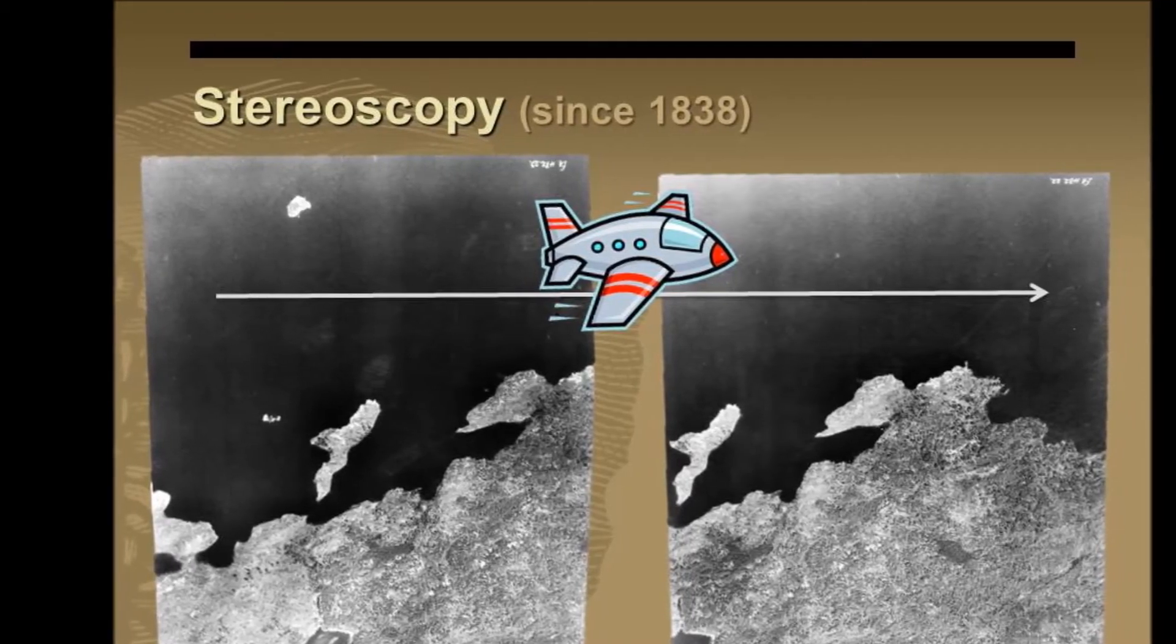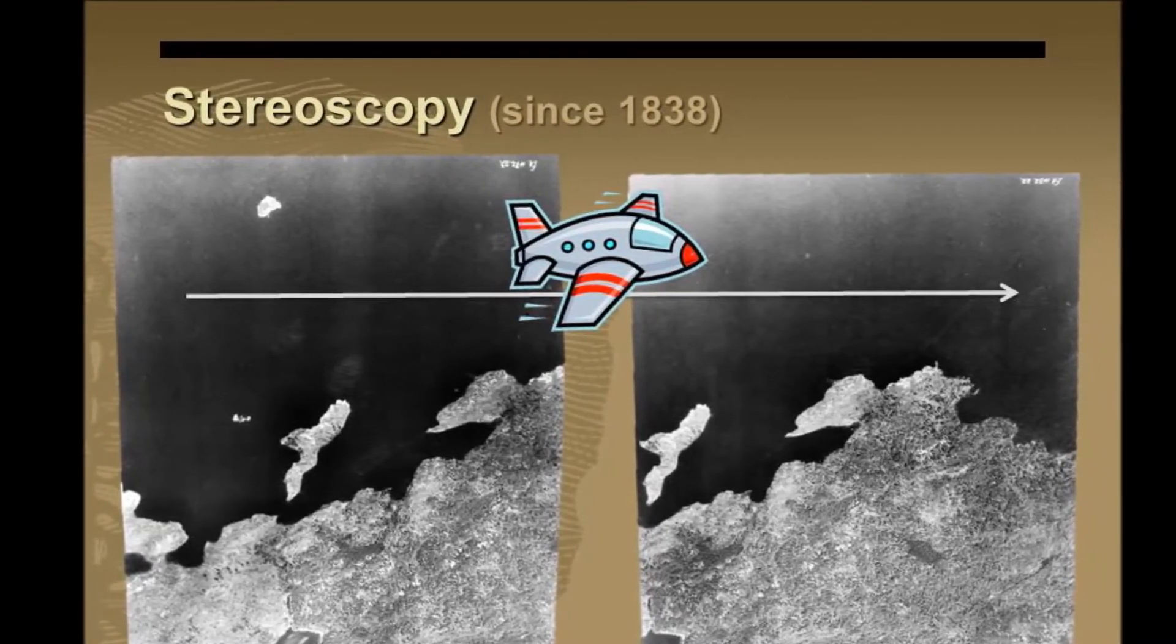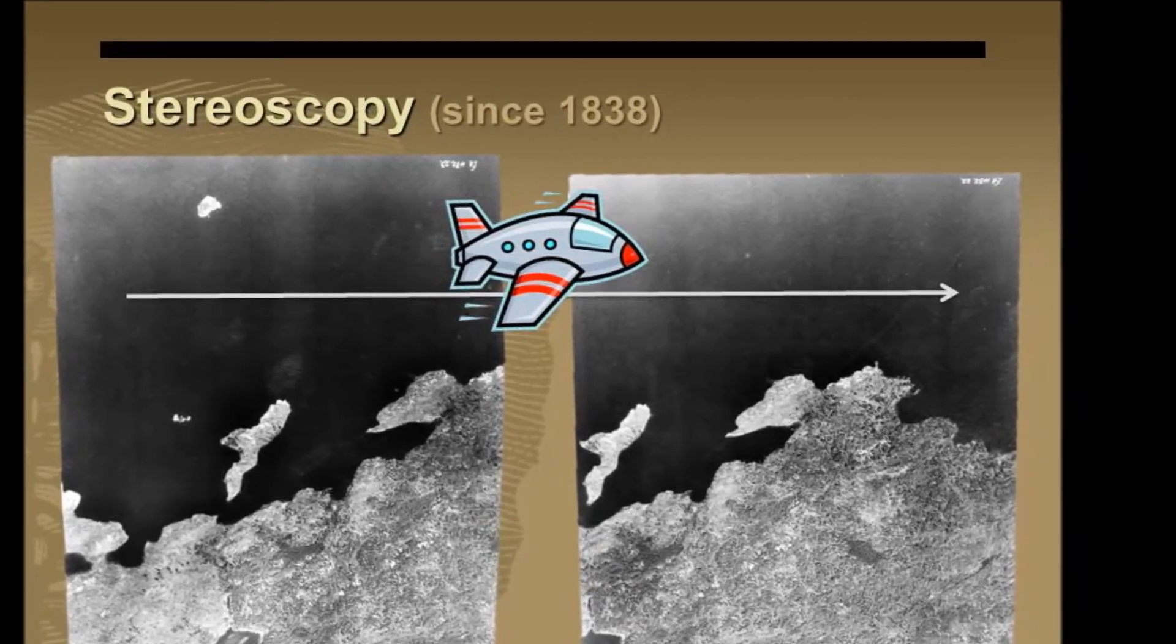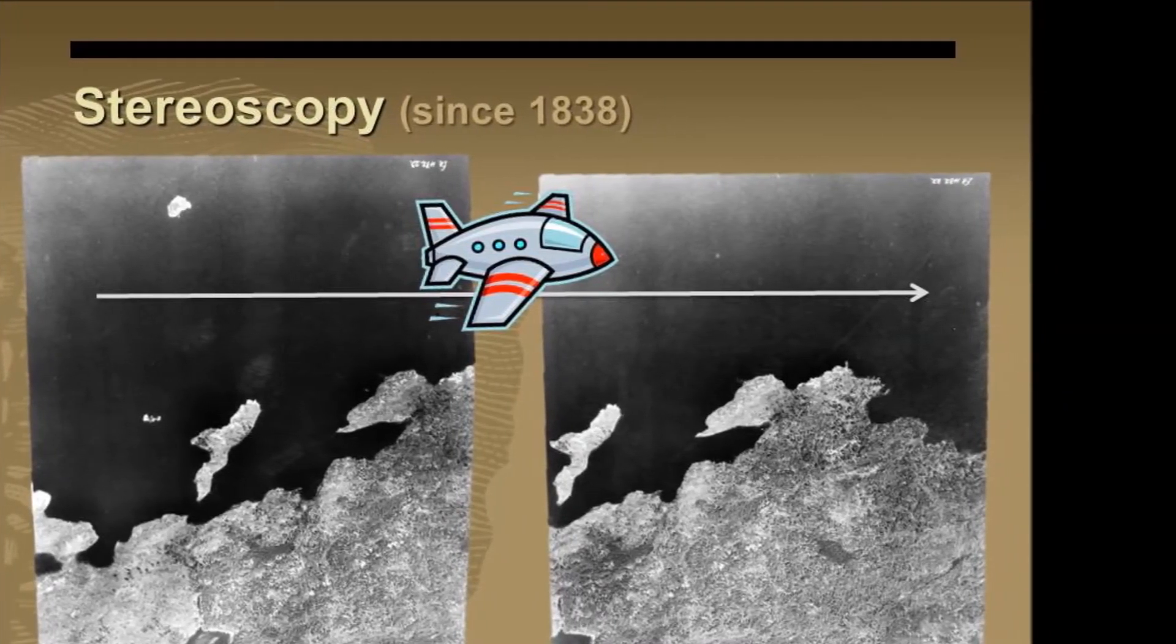For example, here are two aerial photographs taken at Voyagers National Park in 1927. These are some of the earliest images available for Voyagers National Park in northern Minnesota, and were taken by the International Joint Commission.